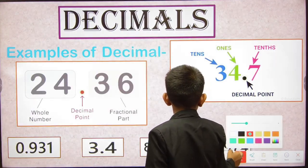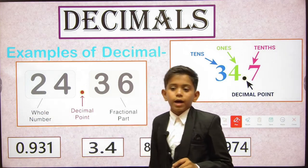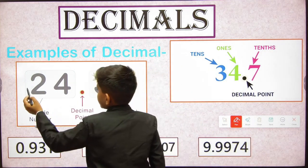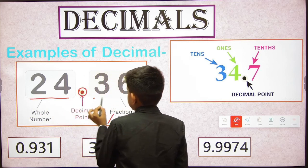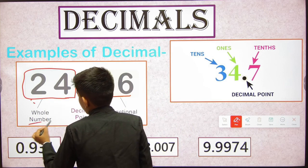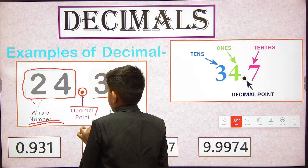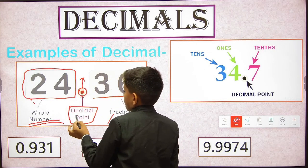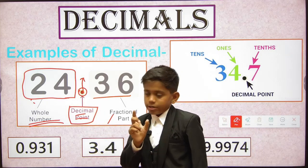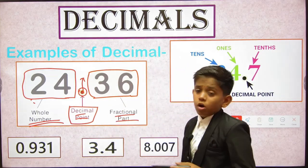Now we will learn what the decimal point is, and what the whole part and fractional part are. Here is the example 24.36. The part '24' is called the whole number. The dot in the middle is called the decimal point — when reading, we say 'point'.